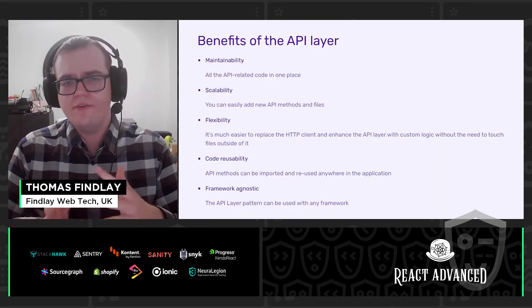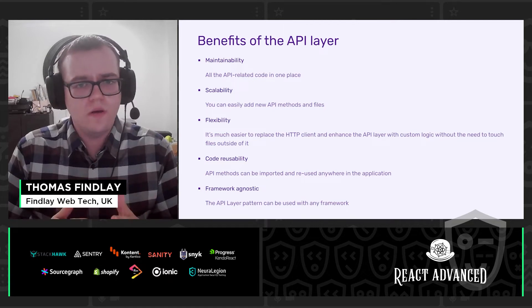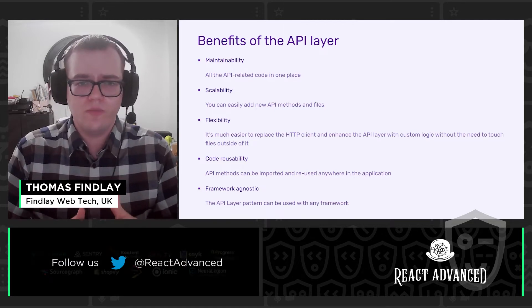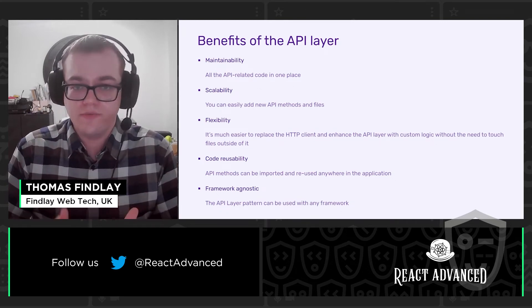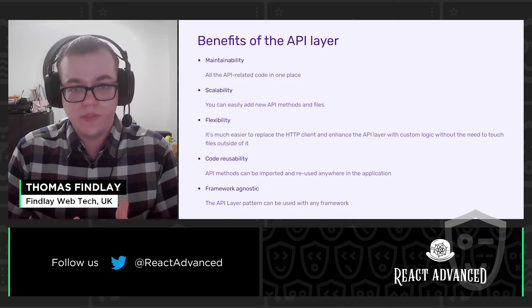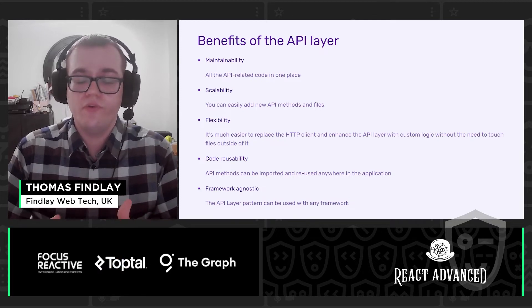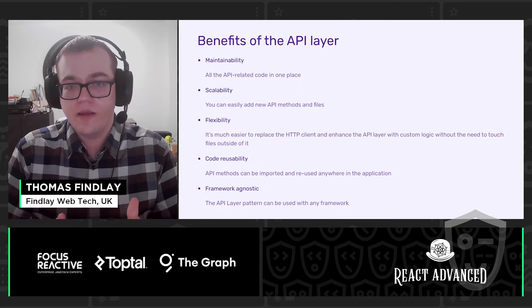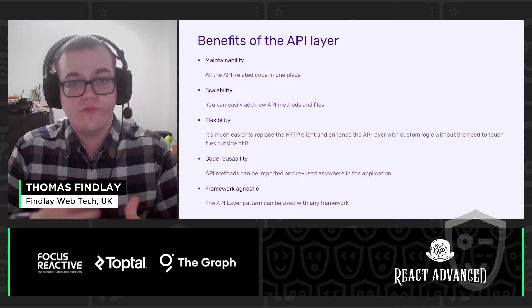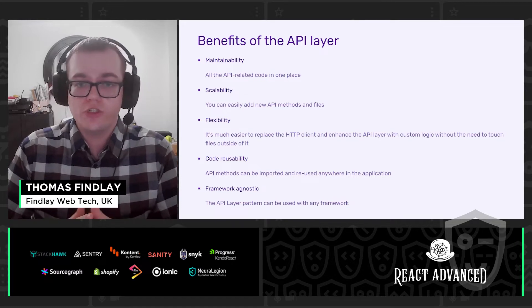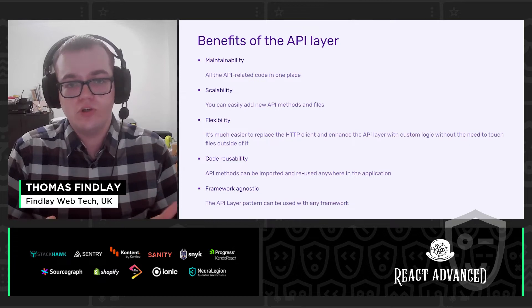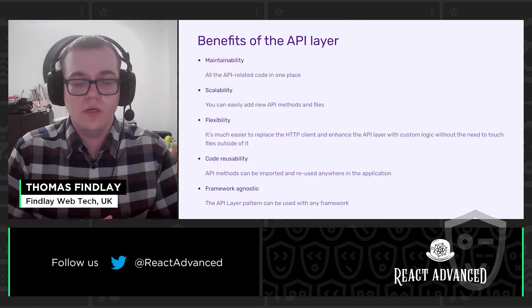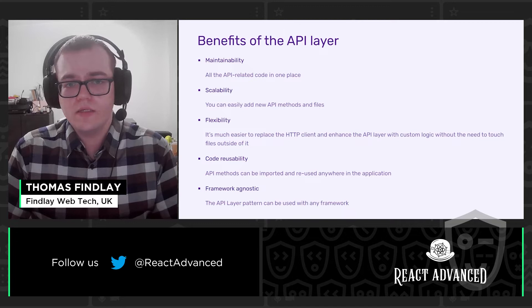Now let's have a look at the benefits of the API layer. First of all, maintainability, as all the API-related code is in one place. Scalability, as you can easily add new API methods and files. We also have flexibility, making it much easier to replace the HTTP client and enhance the API layer with custom logic. As we just saw, we replaced Axios with Firebase without needing any changes to the component. And also code reusability, because API methods can be imported and used anywhere in the application. The API layer pattern is also framework agnostic.